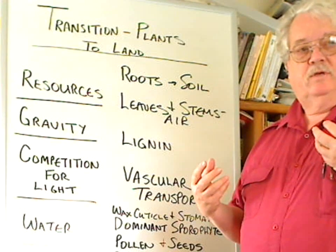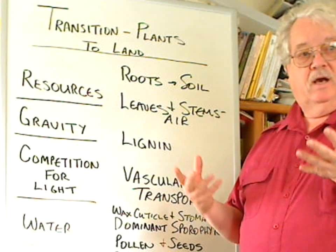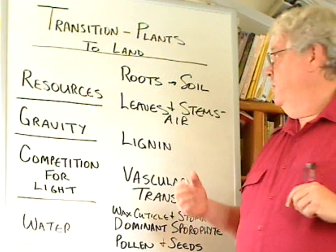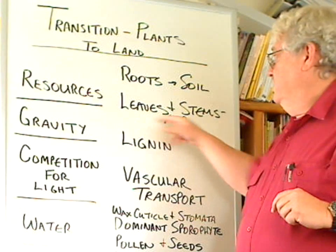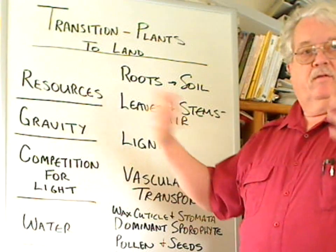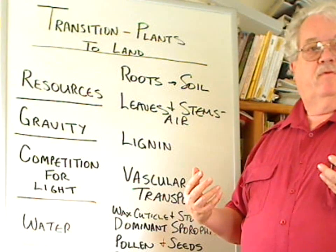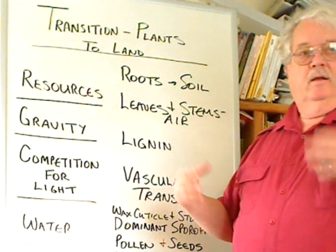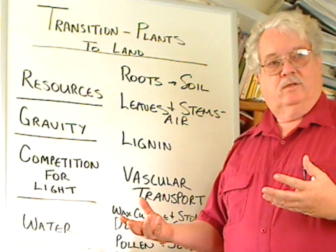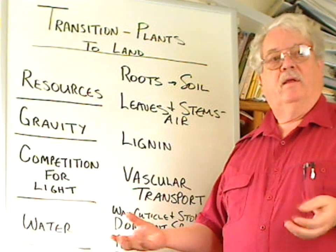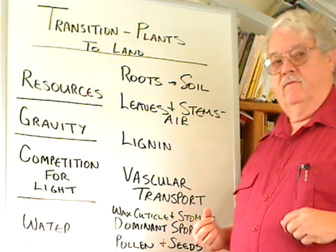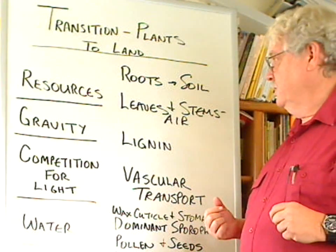This is especially true in association with fungi, which we call mycorrhizae. The leaves and stems are in the air — they gather the sunlight for energy and the carbon dioxide out of the air for manufacturing food through photosynthesis.